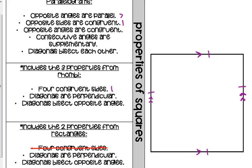That combines properties from parallelograms and from rhombi. Opposite angles are congruent, and more specifically, all angles in a square are right angles. They're congruent from the parallelogram property, and what should have been listed under rectangles — instead of four congruent sides — is four right angles.